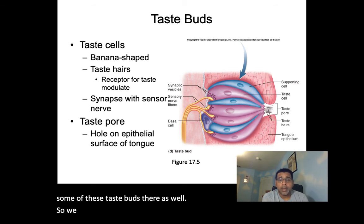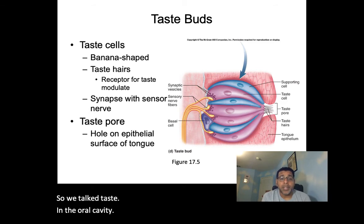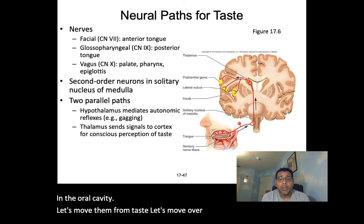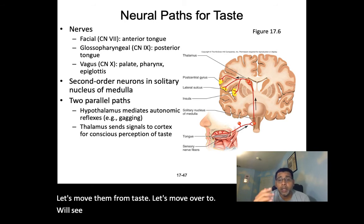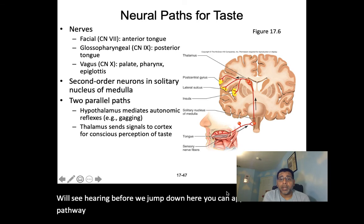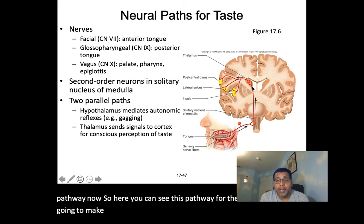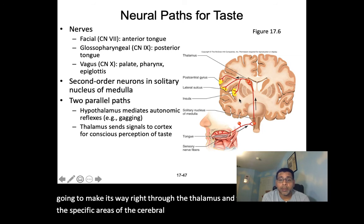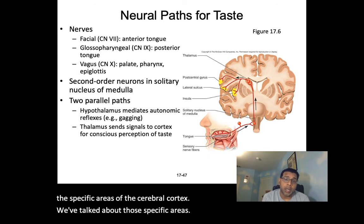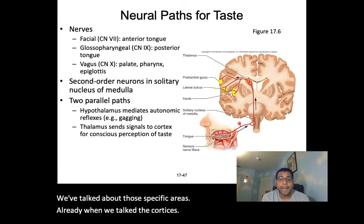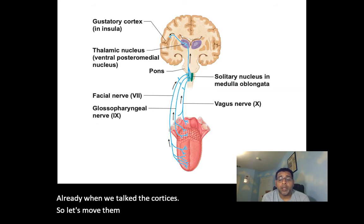For taste, signals make their way through the thalamus and then to the specific areas of the cerebral cortex — unlike smell, which bypassed the thalamus. We've already talked about those specific cortical areas.